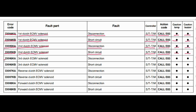Error code DXH6KA. The faulty part is the third clutch ECMV solenoid. The fault is disconnection. The steering and transmission controller is related to this fault. Action code is E03, caution lamp will blink, and caution buzzer will beep.